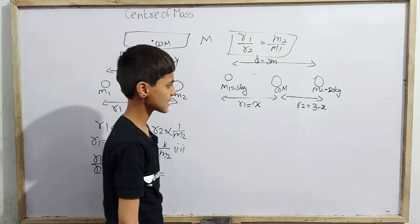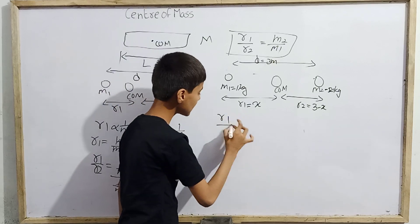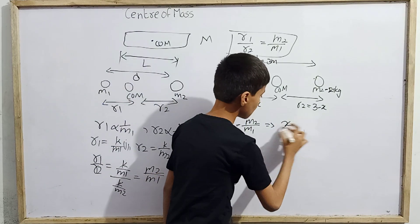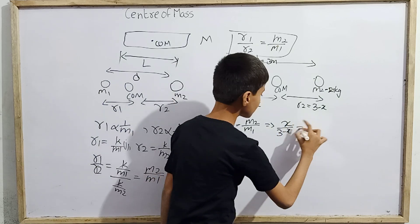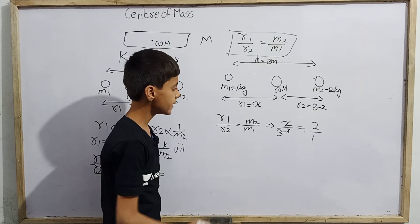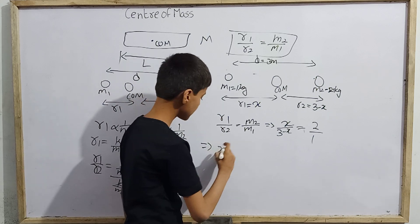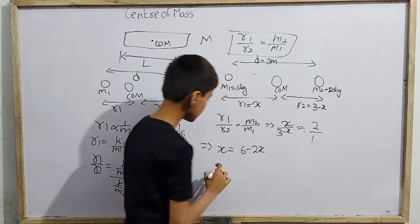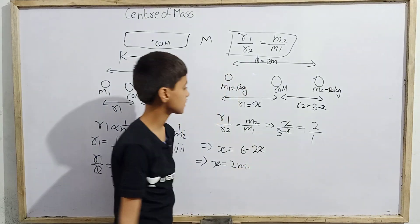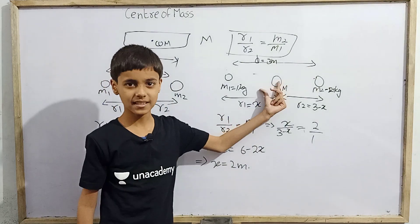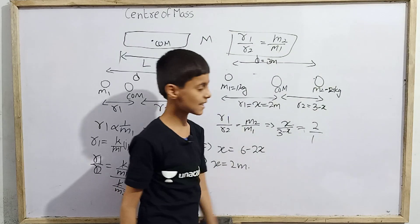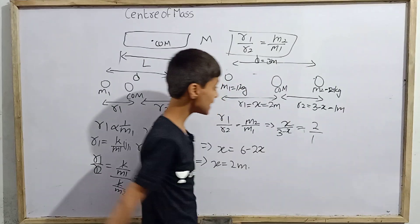Applying r1/r2 = m2/m1, we write x divided by (3 minus x) equals m2/m1, which is 2/1. Cross-multiplying gives x equals 6 minus 2x, so 3x equals 6, therefore x equals 2 meters.